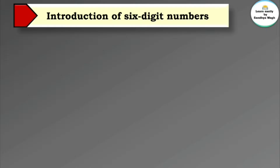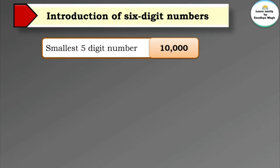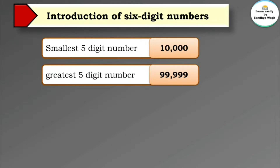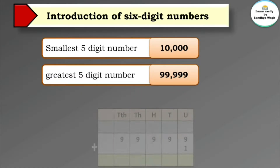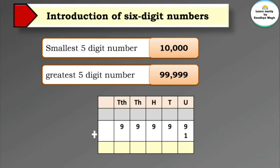You know that the smallest five digit number is 10,000 and the greatest five digit number is 99,999. When we add one to the greatest five digit number: nine plus one is ten, write zero, carry one; again nine plus one is ten, write zero, carry one; again nine plus one, write zero, carry one; again nine plus one, write zero and carry one over.